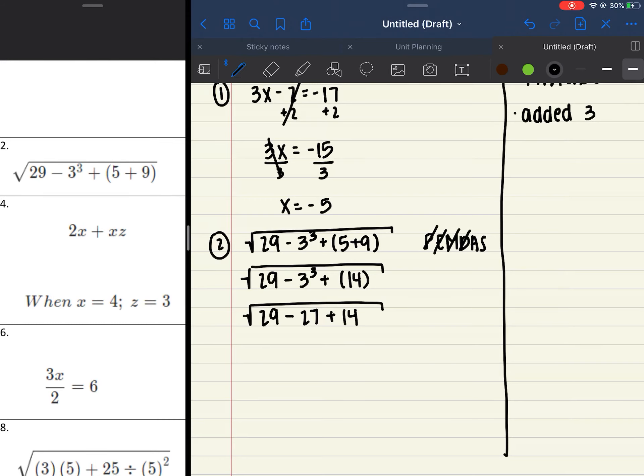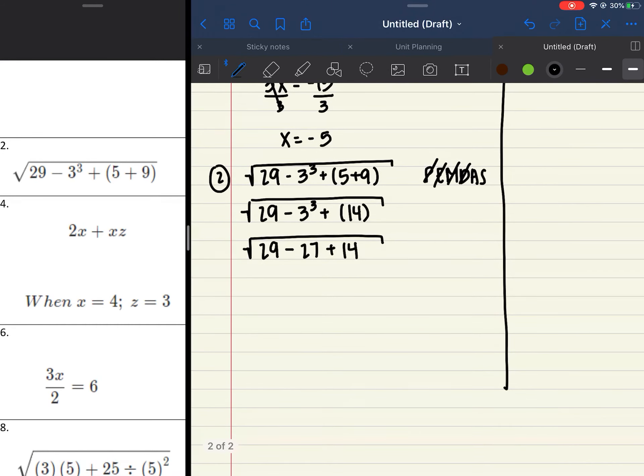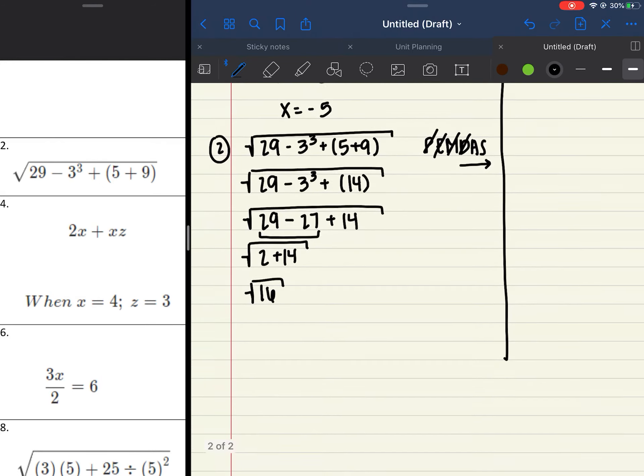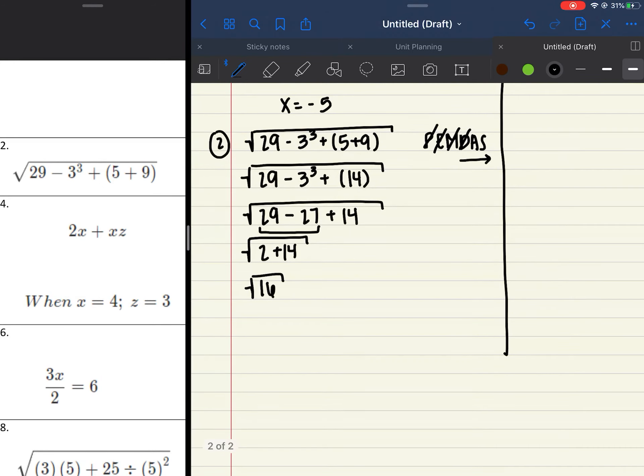And then we still have that plus 14 as well. No more exponents. I need to check for multiplication and division now. There's none, so I'm going to cross them both off. And now we do addition and subtraction, but remember, we go from left to right. So it's going to be the square root of, we first need to do 29 minus 27, which is 2. And then your last step, well, almost, is to do 2 plus 14, which is 16. Now you have the square root of 16, which it does have a perfect square, so your final answer would be 4.